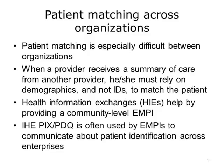Without a single national patient index, the challenge of patient matching is especially difficult between unaffiliated organizations. If an EHR receives a patient summary from an unaffiliated provider, it needs to perform matching to determine if it already has the patient in its EHR. The provider cannot use the patient ID sent by the referring physician since it is not a shared ID. Instead, it must rely on demographics to attempt matching. Health Information Exchanges, HIEs, help by providing a community-level EMPI that links patients across the organizations in their exchange.